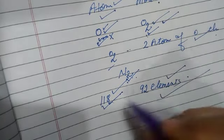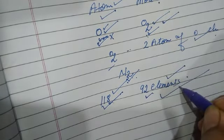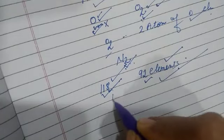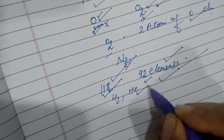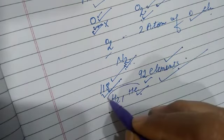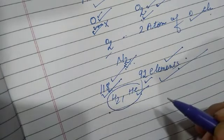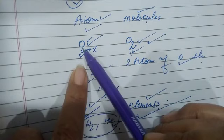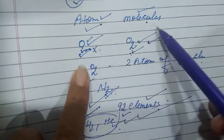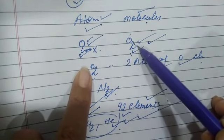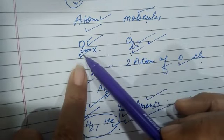Out of 92 elements, these are found occurring in nature. The most abundant elements in the universe are hydrogen and helium. The oxygen atom cannot exist independently — it is present in the atmosphere in the combined form as the oxygen molecule, which is formed from two oxygen atoms.